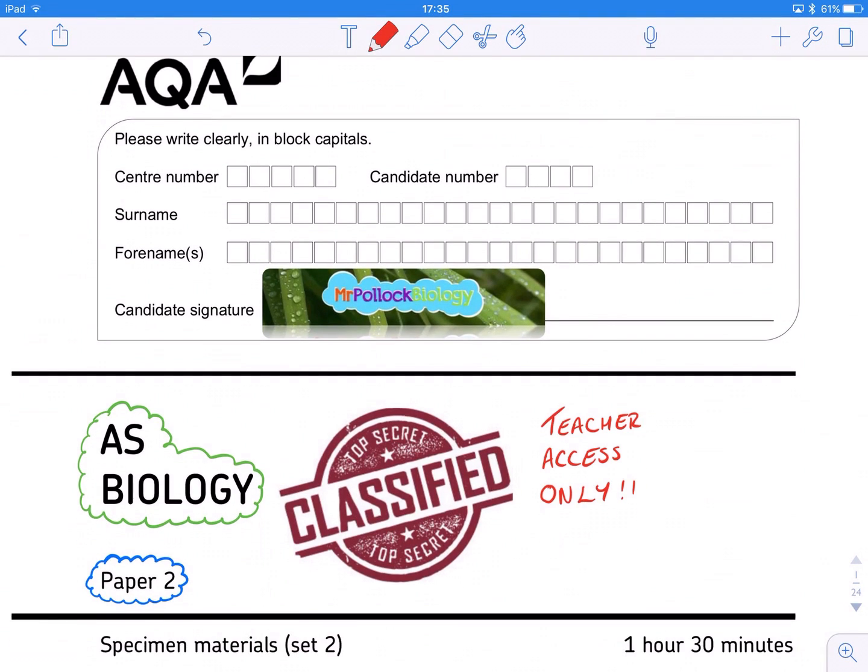Hi guys, Mr Pollack Biology here once again. We're back with Paper 2, a run-through of the super-secret teacher-only specimen materials for the new AS level biology exam. The exam's on Tuesday. I know it's been last minute. I've been out of the country. I'm really sorry. I'm going to try and bash through this and hopefully you guys will find it as useful as my last run-through.